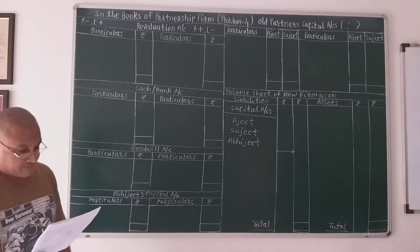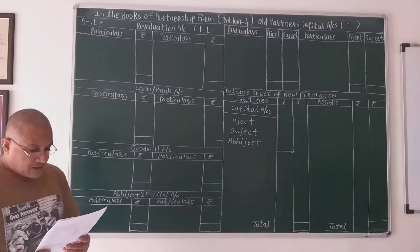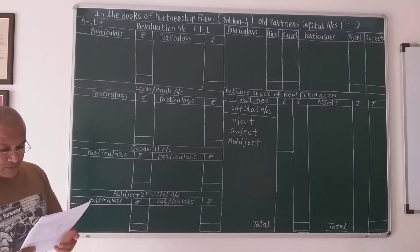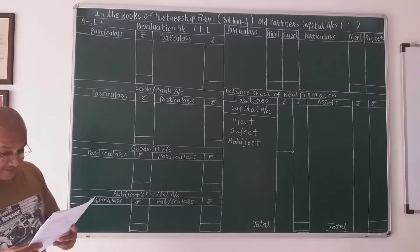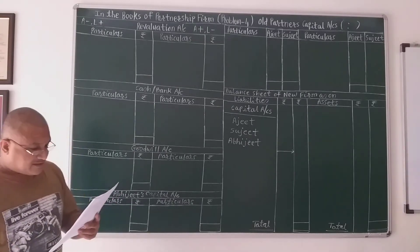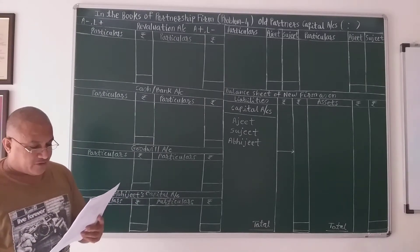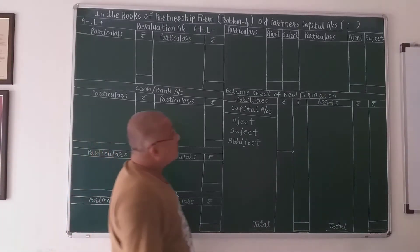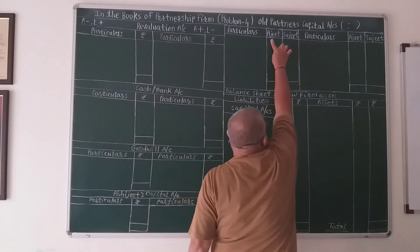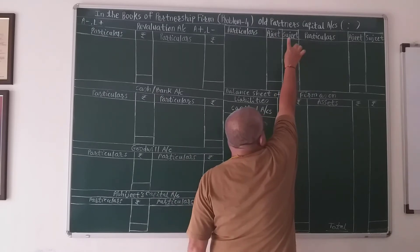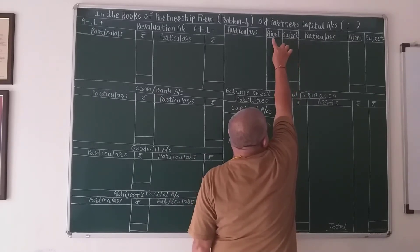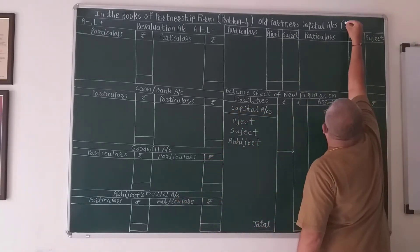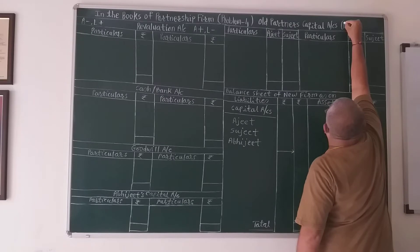Today we will start with sum number 4. Ajit and Sujit are partners in a firm sharing profits and losses equally. These are the names of the old partners. Old partners' capital account means Ajit and Sujit. Profit sharing ratio is 1 to 1.